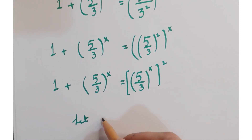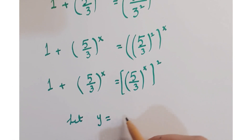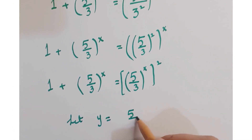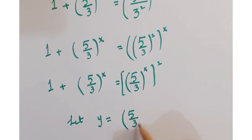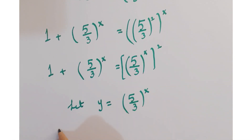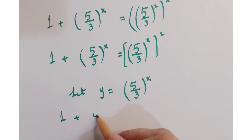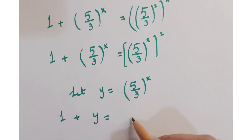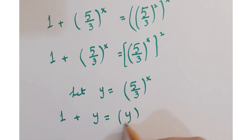Now let's assume that y equals (5 upon 3) whole to the power x. So we have 1 plus y equals y squared.